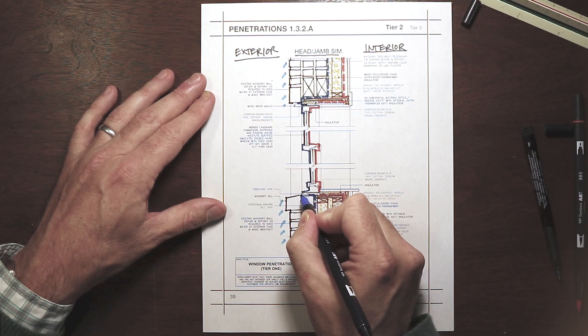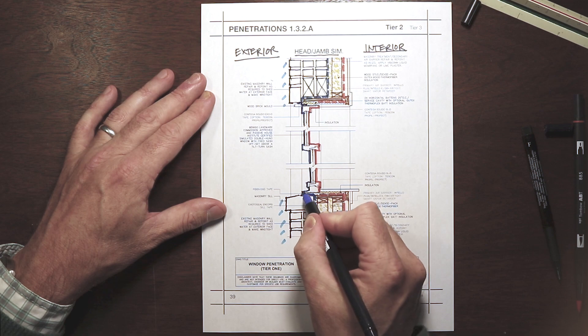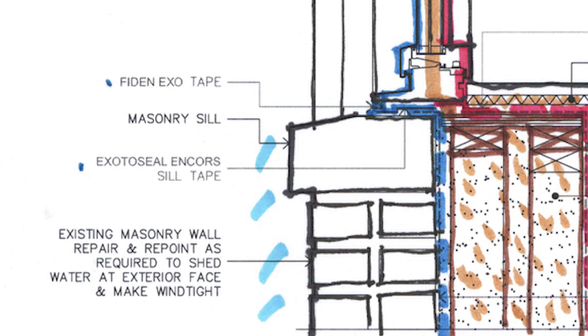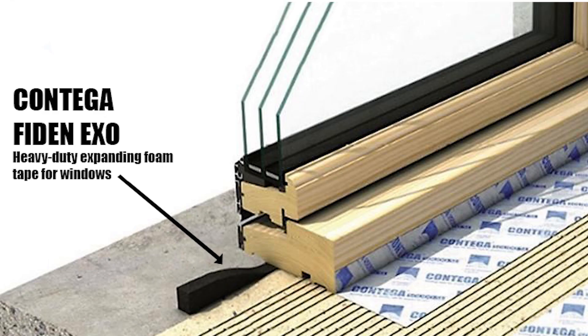At the sill, a water protection sill pan is provided by EXTO seal encores and weather sealed at the exterior with FIDEN EXO.